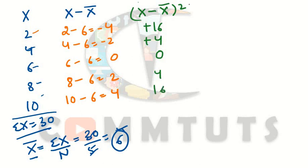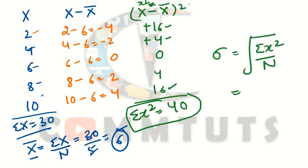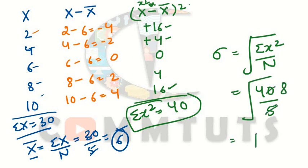Now we total the squared deviations: 16 plus 4 is 20, plus 4 plus 16 is 20, so summation x-squared equals 40. Applying the standard deviation formula: sigma equals square root of summation x-squared divided by n, which is square root of 40 divided by 5, equals square root of 8, which gives 2.83. So the standard deviation is 2.83.